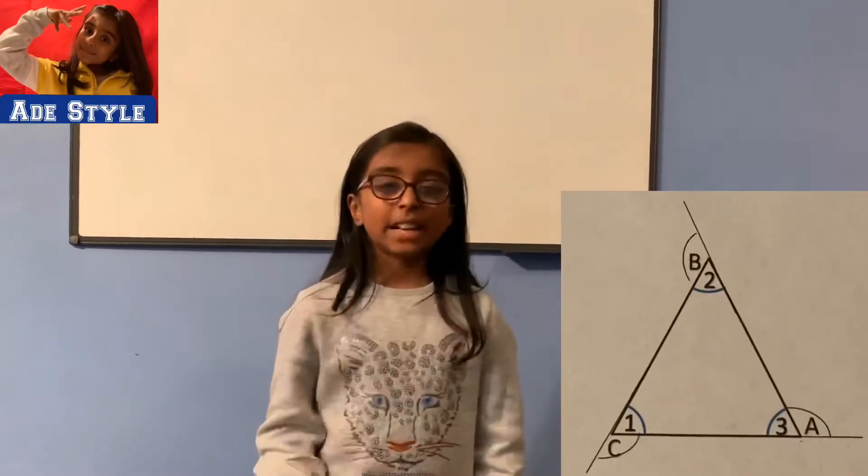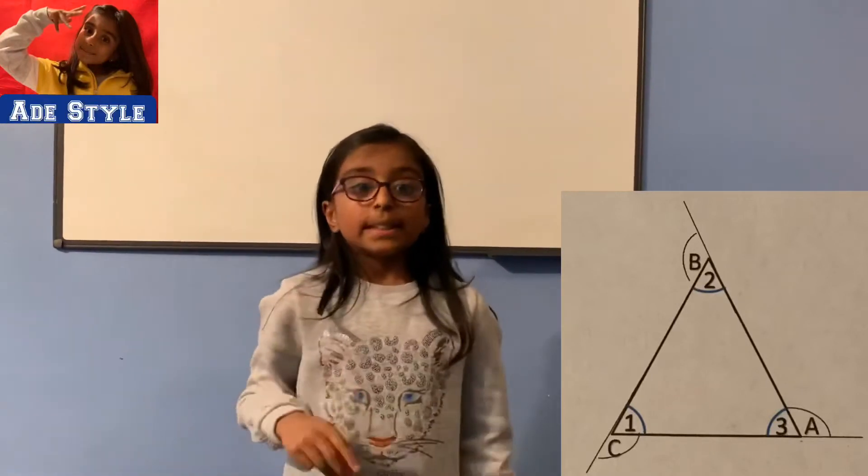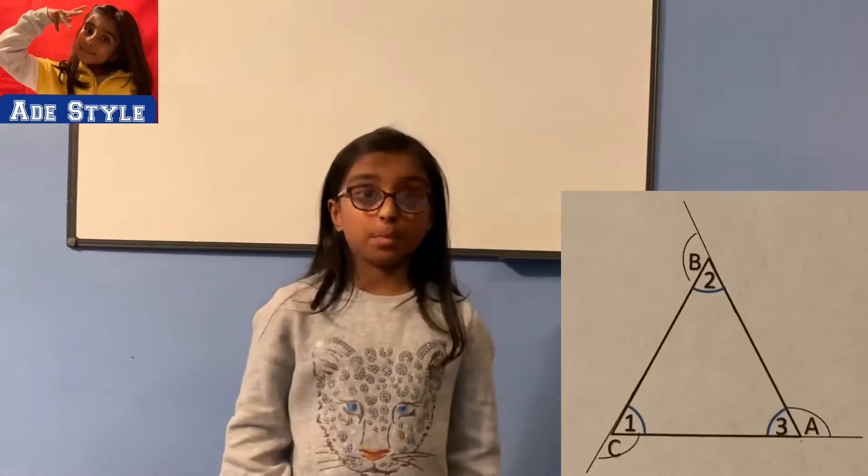Today we're going to look at angles in polygons. There are three internal angles. These are named 1, 2 and 3. These angles always add up to 180.